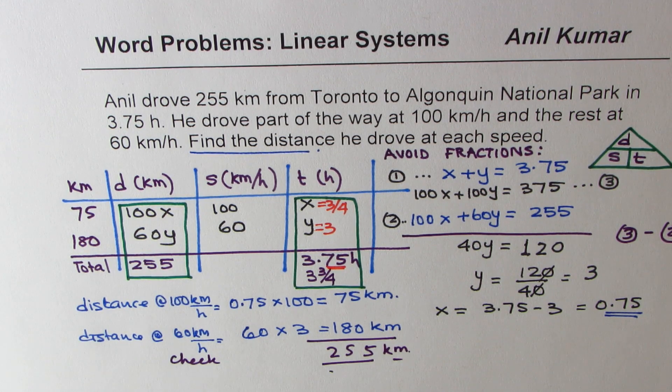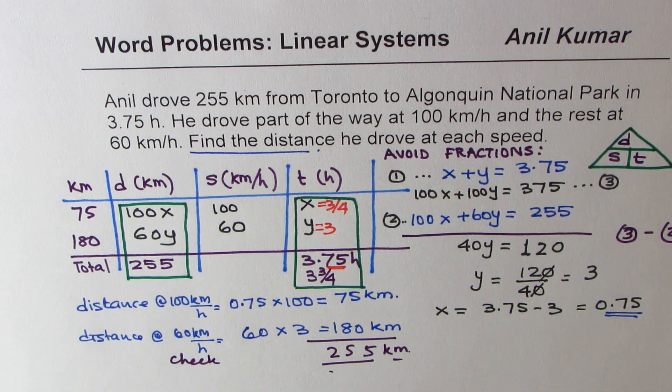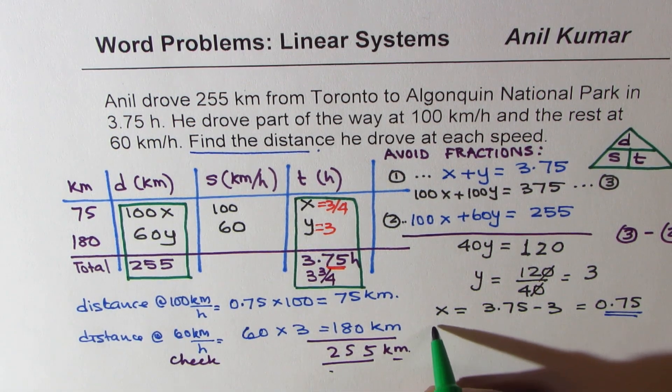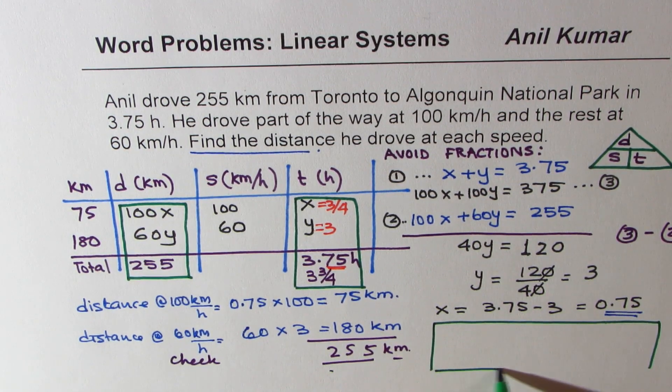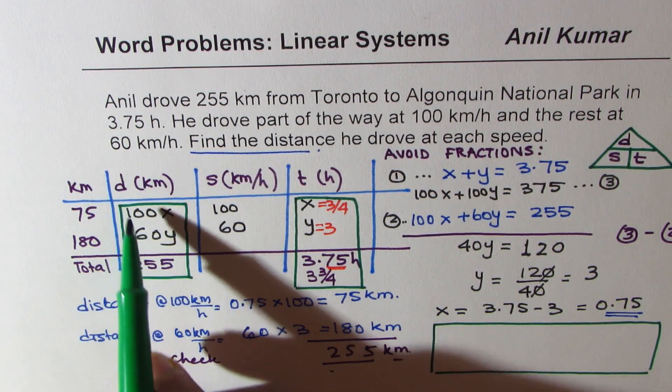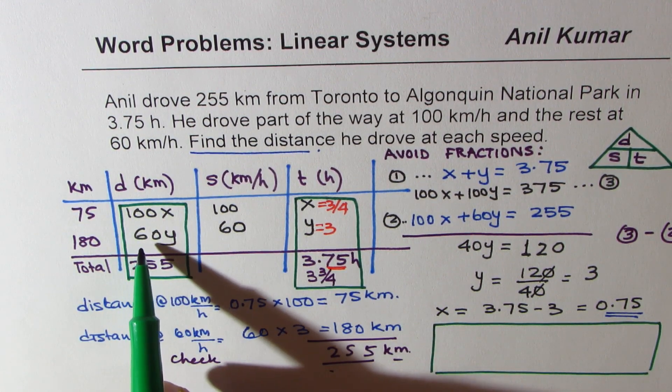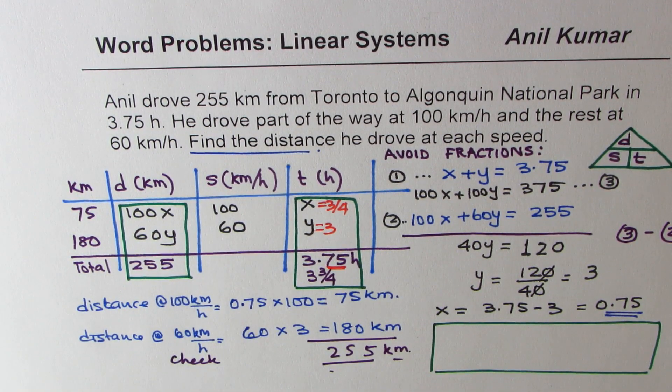So I'd like you to pause the video, try to understand how we totally avoided fractions to solve our equation, which could be difficult. So what did we avoid? We avoid fractions. If you define distance as x and y, you may land up with equations with fractions, which we avoided.